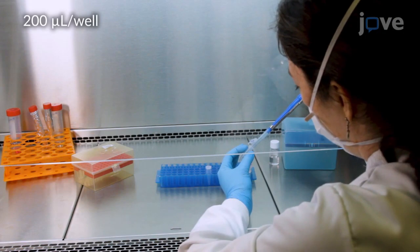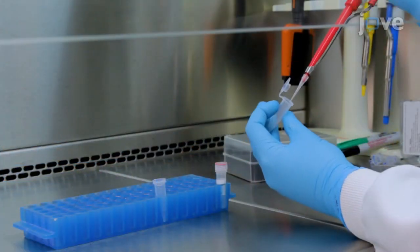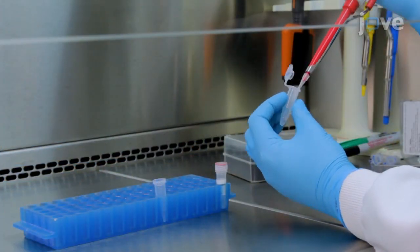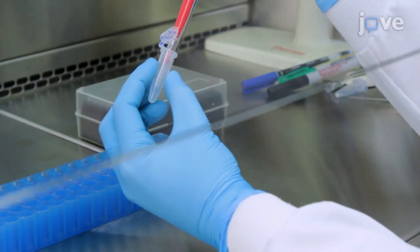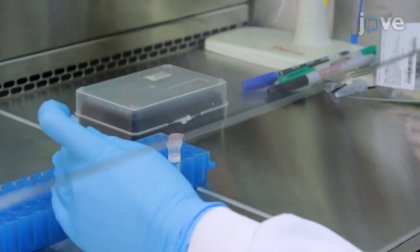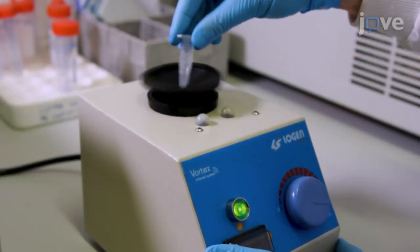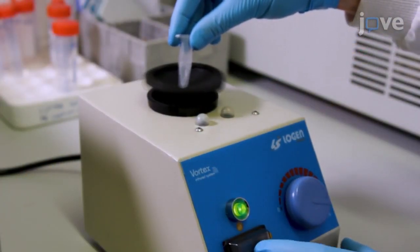Prepare a tube with the transfection buffer, then add 2 micrograms of PMTE1A DNA, vortex, and add 2 microliters of transfection reagent. Vortex again and incubate for 10 minutes at room temperature.